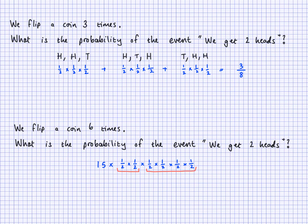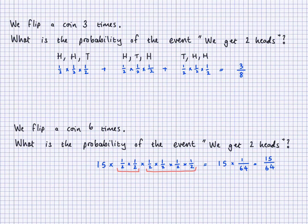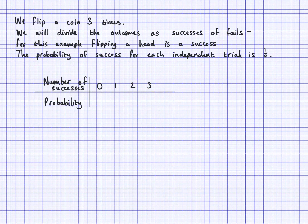This gives us 15 × (1/64) = 15/64. All of these probabilities — for one head, three heads, four heads, five heads — can be found using a function called the binomial distribution. It gives us all those probabilities, so whichever one we need we just look it up and state it as our answer.